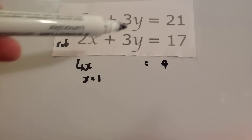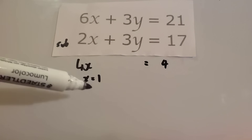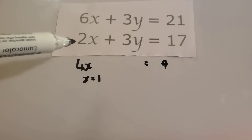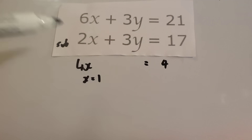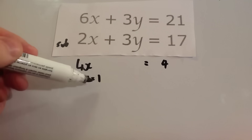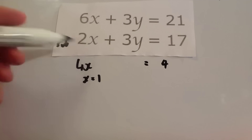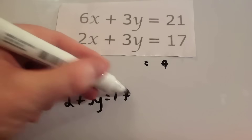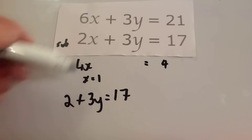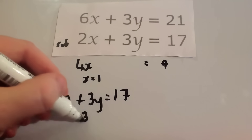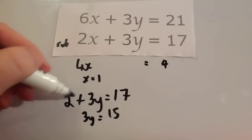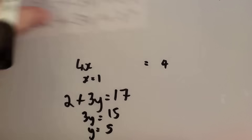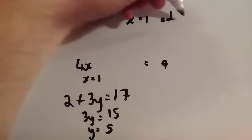Now we've worked out x equals 1, we need to find y. We substitute x equals 1 into one of the two equations — I'll use the simpler bottom one: 2x plus 3y equals 17. So 2 times 1 is 2, plus 3y equals 17. Taking 2 off both sides gives 3y equals 15, and dividing by 3 gives y equals 5. So the solution is x equals 1 and y equals 5.